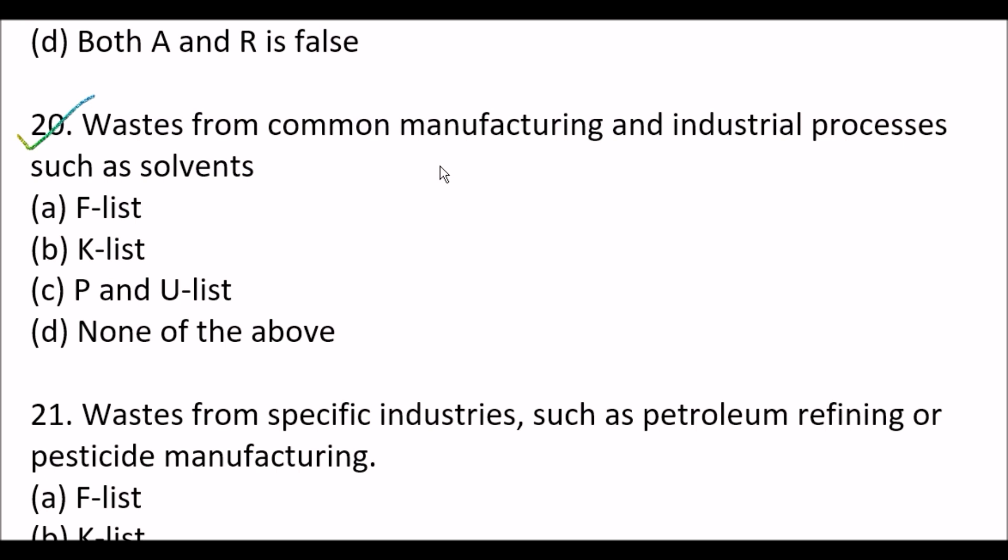Normal multiple choice question: Wastes from common manufacturing and industrial processes such as solvents - Option A - F list, Option B - K list, Option C - P and U list, Option D - none of the above. The right answer is Option A - F list.